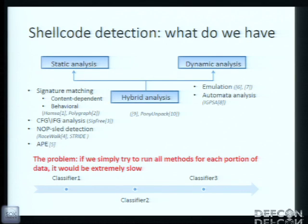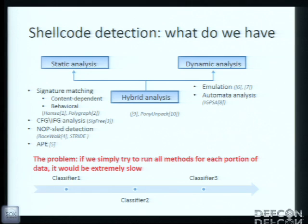Dynamic analysis methods are presented by emulation and automatic analysis techniques. Hybrid analysis methods could use all of those techniques. If we look at those methods, we can notice that none of them can detect every type of shellcodes. So if we want to detect everything, we can simply try to execute one algorithm after another, but it would be extremely slow.